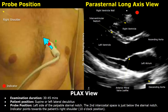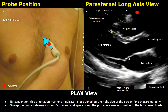This red dot is the probe indicator or orientation marker. The indicator must face the patient's right shoulder — the probe is in a 10 o'clock position. In echocardiography, the indicator is present on the right side of the screen, which is opposite to standard ultrasound where the indicator is on the left side. Make sure the indicator is on the right side before starting the scan. Sweep the probe between the second and fifth intercostal spaces while keeping it close to the left sternal border to get this image.